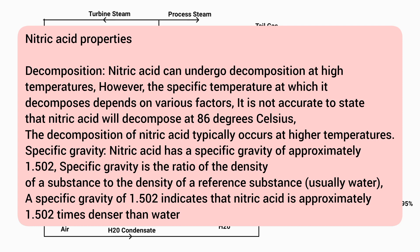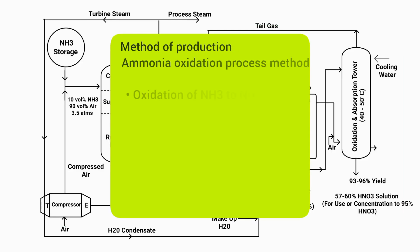Specific gravity: nitric acid has a specific gravity of approximately 1.502. Specific gravity is the ratio of the density of a substance to the density of a reference substance, usually water. A specific gravity of 1.502 indicates that nitric acid is approximately 1.502 times denser than water.